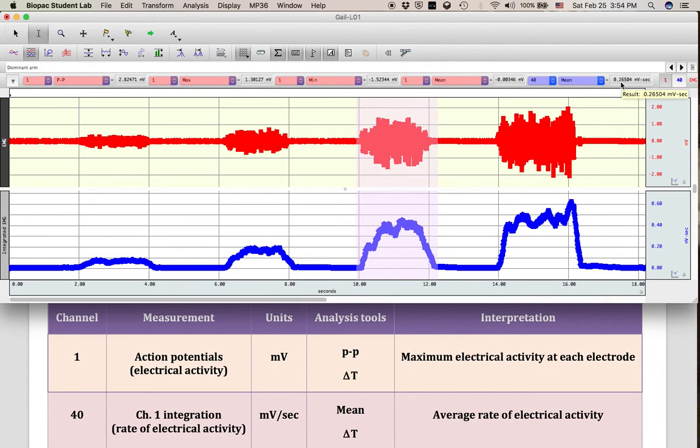I have 0.265 millivolts occurring every second within this clench effort on average because it's taking the beginning, the middle, and the end of the clench effort. What is the average rate in that clench effort? That is what channel 40 mean really tells you.